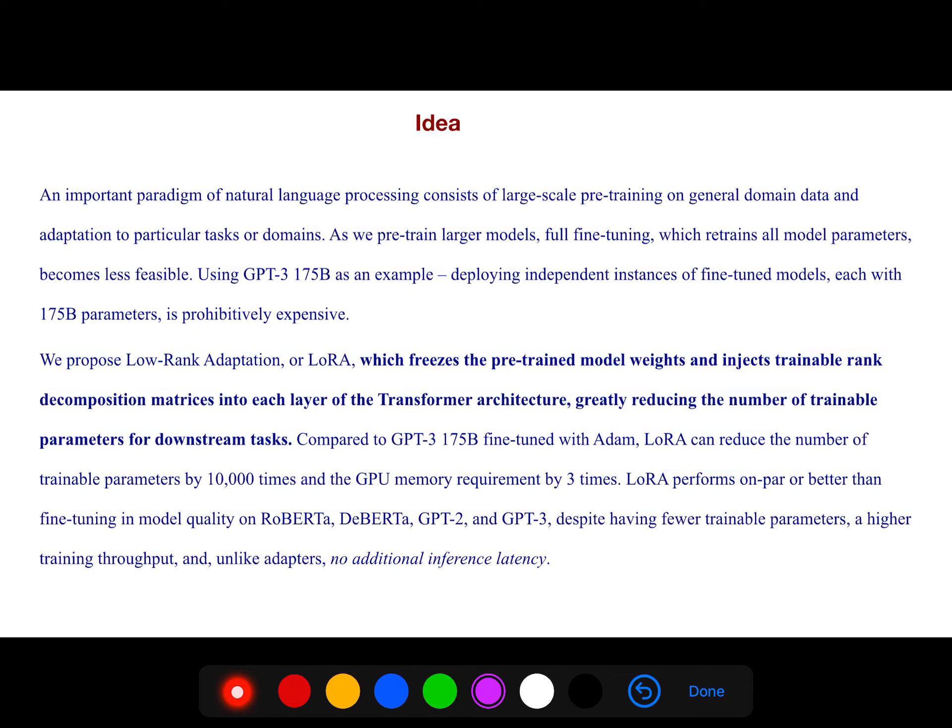We propose low-rank adaptation, or LoRA, which freezes the pre-trained model weights and injects trainable rank decomposition matrices into each layer of the transformer architecture, greatly reducing the number of trainable parameters for downstream tasks.